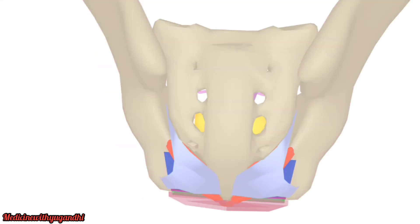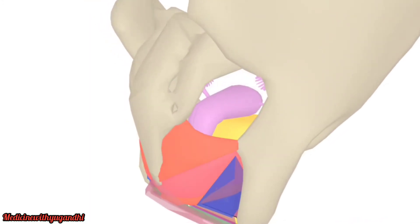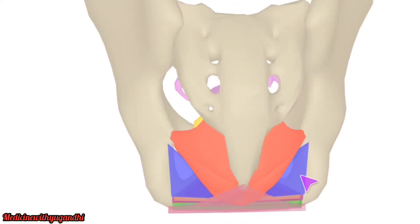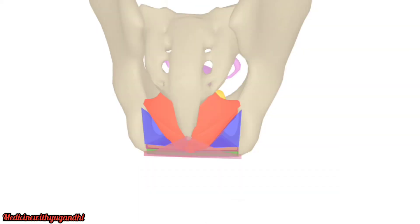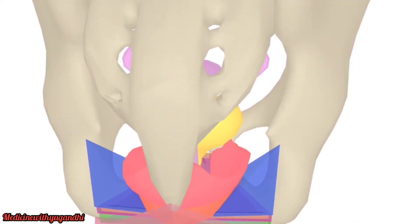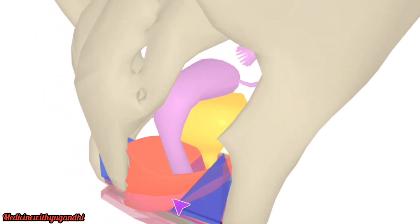When you remove the sacrotuberous ligament, you can notice the coccygeus muscle, the iliococcygeus, the ischioanal fossa, and the anal triangle. Further, if you remove the coccygeus and iliococcygeus muscles, you can see the pubococcygeus.